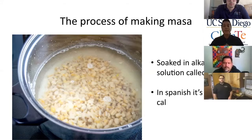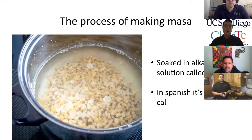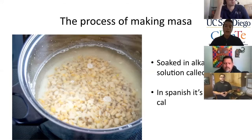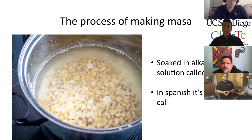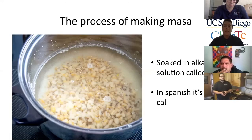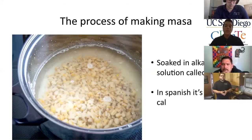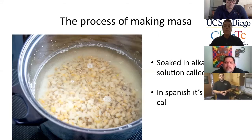Nixtamalization is a process where corn kernels are heated in an alkaline solution of water and calcium oxide — that's what we mentioned before, 'cal' in Spanish or lime in English — in order to remove the outside layer called the pericarp. According to the traditional recipe, corn kernels should be kept in alkaline solution overnight after being heated. Then the corn is drained and washed two or three times, as you saw in the video.